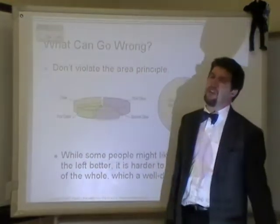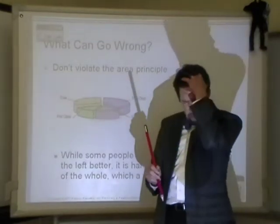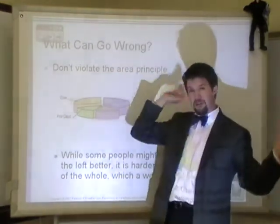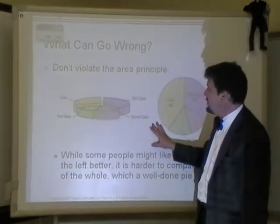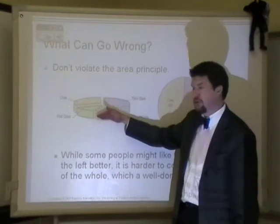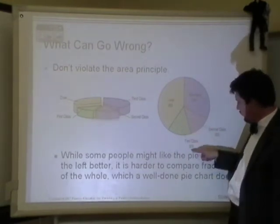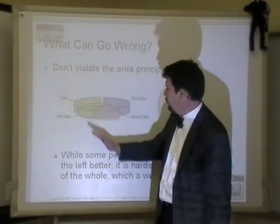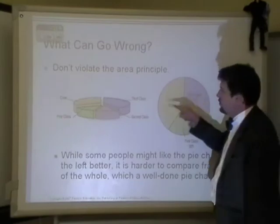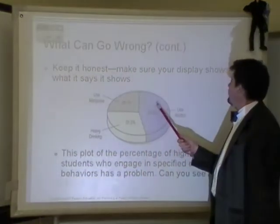What can go wrong? The area principle is a big issue. Microsoft Excel will ask if you want to make your graph 3D — but 3D is based on perspective, so the front looks bigger than the back. Look at second class with 285 people versus first class with 225 people — because second class is closer to you, it looks significantly bigger. Third class versus crew has the same problem. 3D graphs, especially pie charts, don't work.